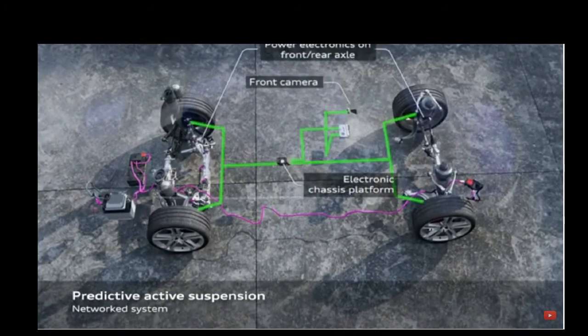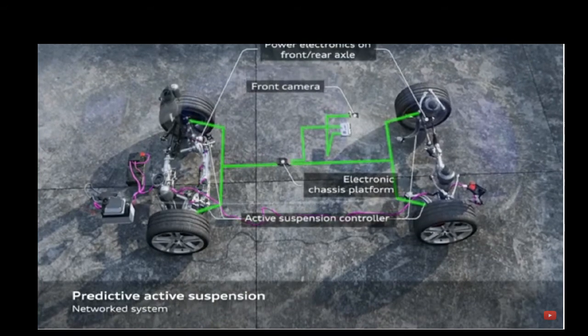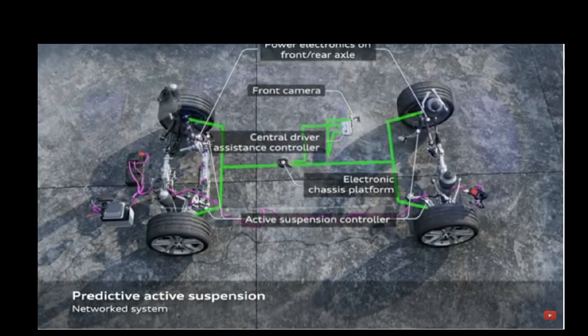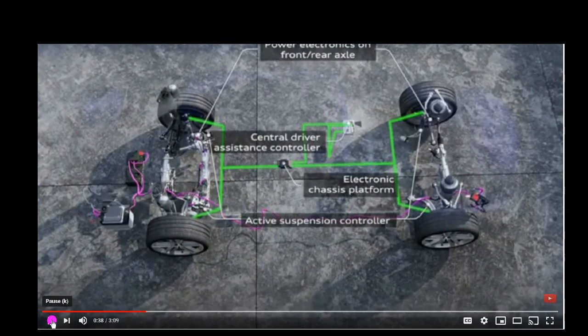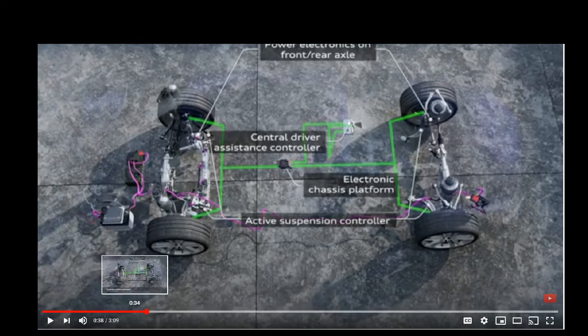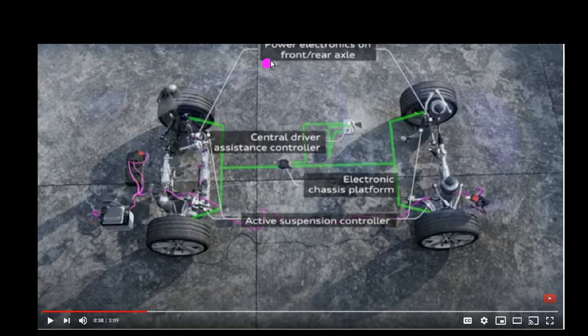Another feature of the Comfort Plus mode: in curves the body tilts inwards by up to three degrees. You can see that there's power electronics on the front and rear axle that would be in the struts and on the suspension. There's going to be a central controller. There's also a camera added into this system and that's what makes this a little bit different than some of the systems.